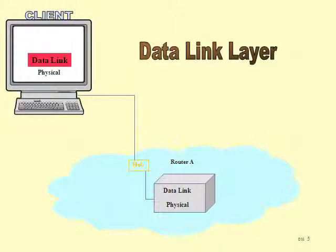There's your data link between the client and router A. Notice the data links have two separate OSI layers: the data link layer and the physical layer, but normally they are tied together by some protocol on the local area network — and in this case, today, we're talking about the protocol Ethernet.